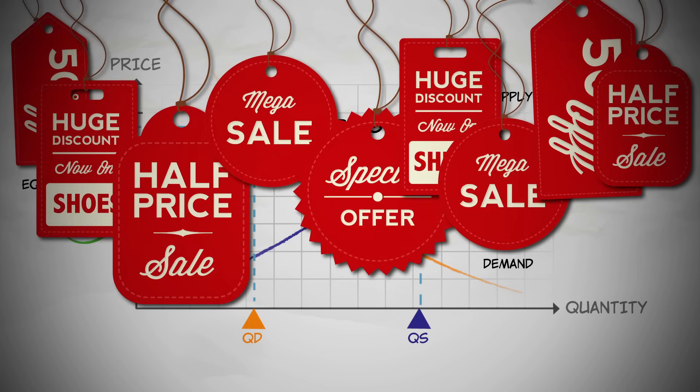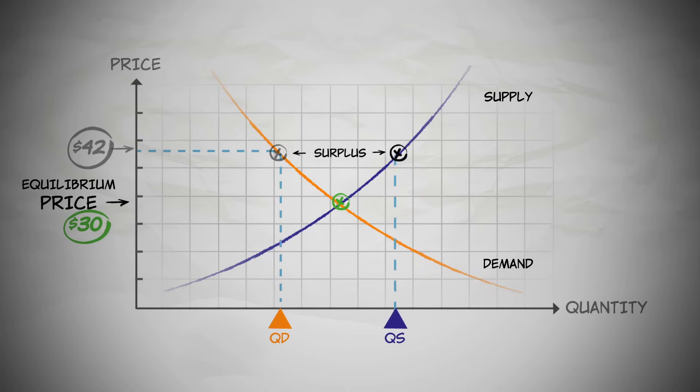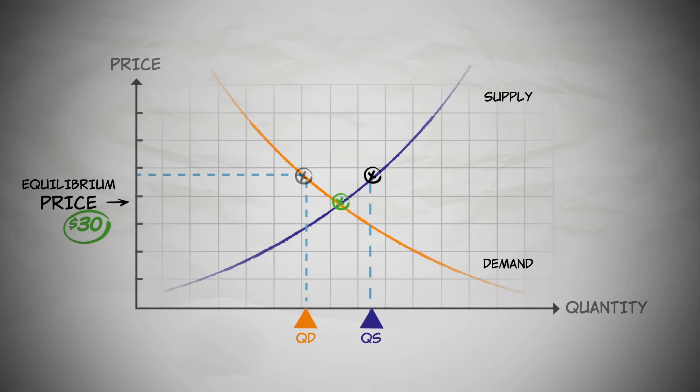When there's a surplus, sellers can't sell as much as they would like to at the going price. So, sellers have an incentive to lower their price a little bit, so they can out-compete other sellers and sell more. The price will continue to fall until the quantity demanded is equal to the quantity supplied, and equilibrium is reached.